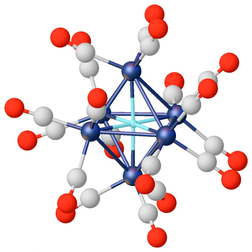In chemistry, a hydride is the anion of hydrogen, H⁻, or, more commonly, it is a compound in which one or more hydrogen centers have nucleophilic, reducing, or basic properties.